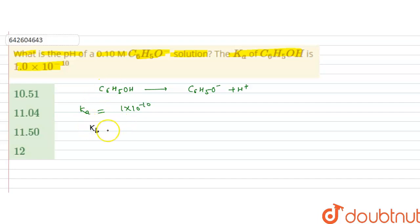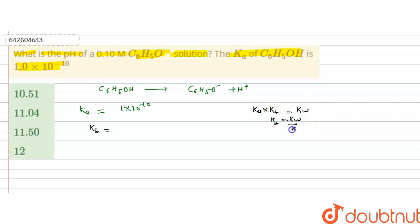Kb can be found using the relation Ka × Kb = Kw, where Kw is the ionic product of water. So Kb = Kw / Ka. Kw is 10⁻¹⁴ and Ka is 1×10⁻¹⁰, so Kb = 10⁻¹⁴ / 10⁻¹⁰ = 10⁻⁴.